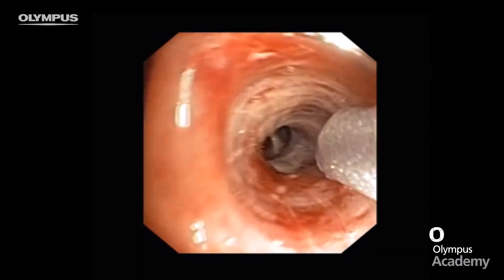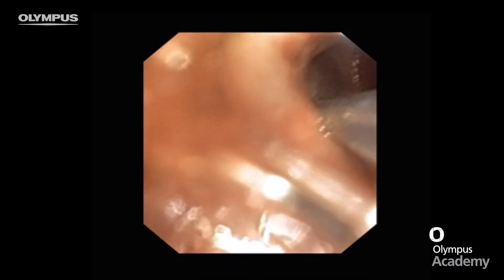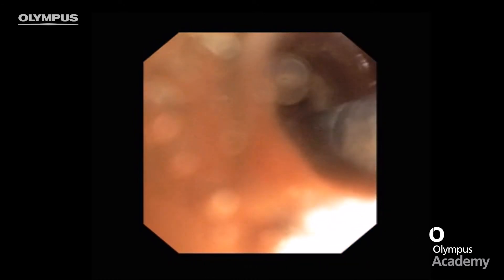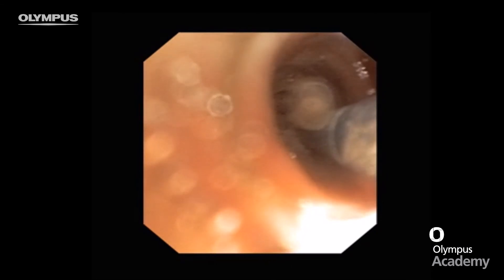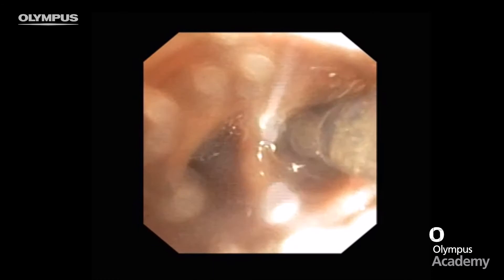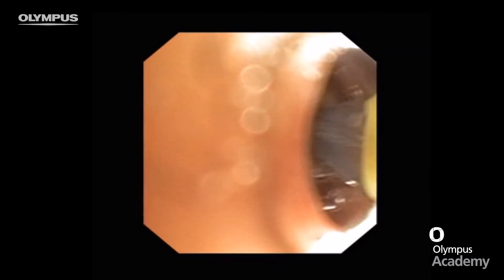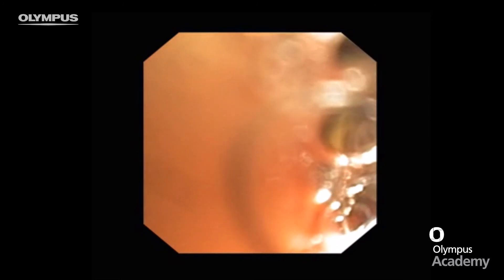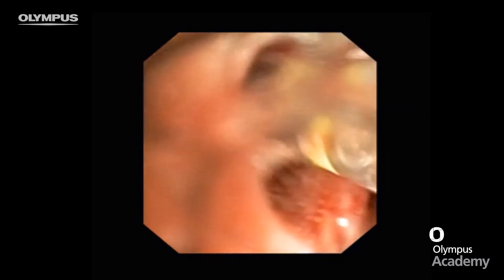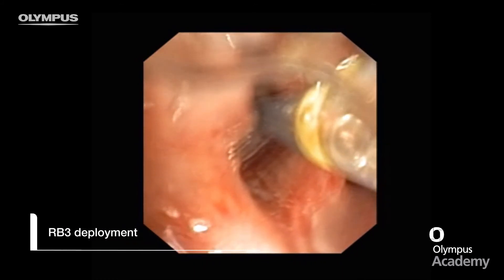The next step is determining the order of valve deployment. I generally like to deploy the valve in the most difficult segment first. I also aim to avoid the removal rod stems crossing each other, which could interfere with valve function. In this case, the first valve — a size 7 — is deployed into RB3.